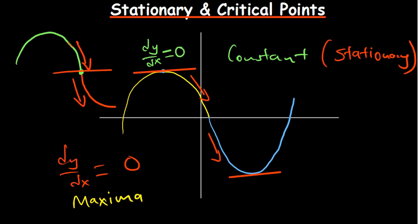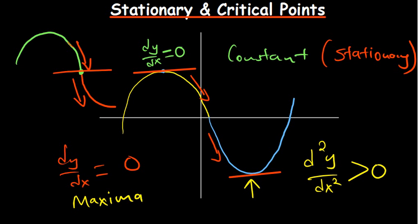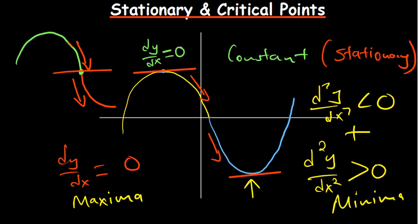We use the second derivative to determine whether a point is a maxima or minima. When the second derivative is greater than zero (positive), the point is a minima. When it is less than zero (negative), it is a maxima. When it equals zero, that is a point of inflection. So stationary points are where dy/dx equals zero, and we have three types: maxima, minima, and point of inflection.